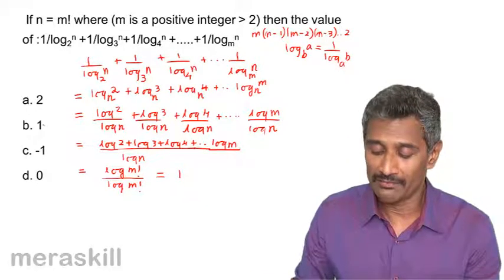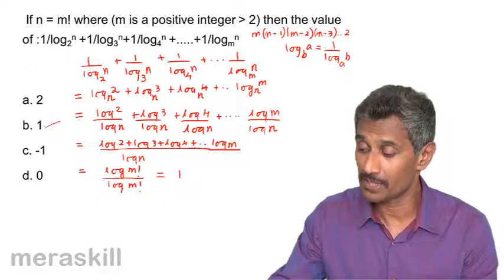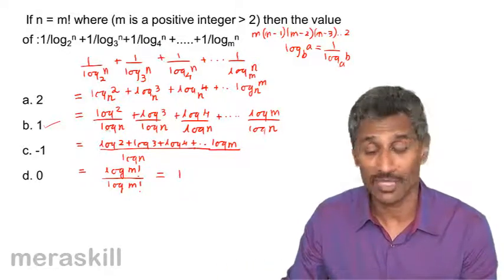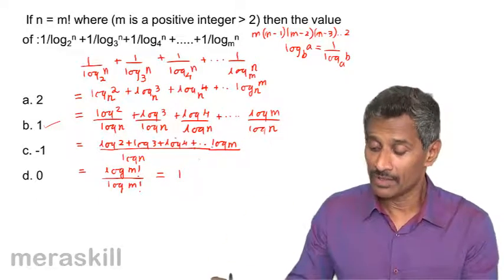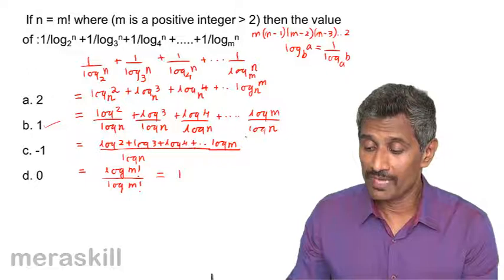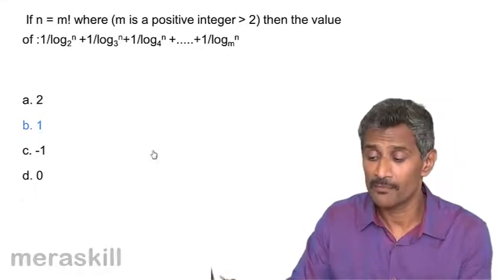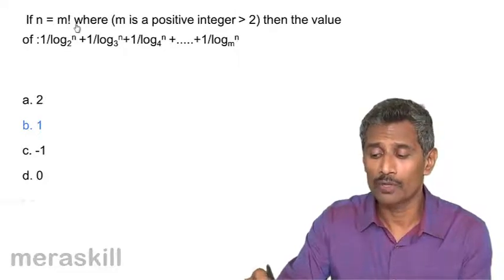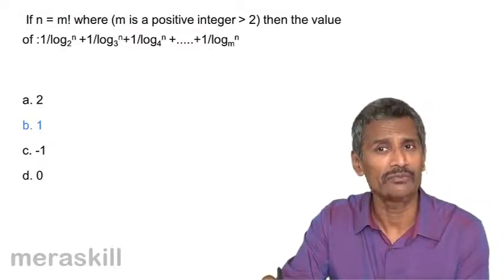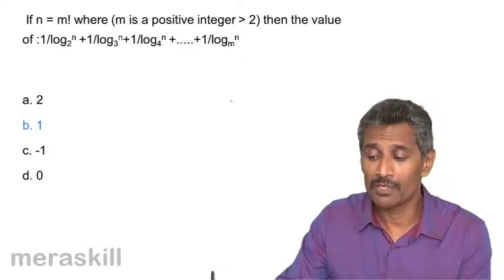Among the options, 1 is the answer. Remember, two rules are used here: first, 1/log_b(a) = log_a(b); second, change of base so that we get a common denominator. For those not clear on m factorial, please check the video in the module on permutation and combination where factorials are covered in detail. The answer is 1.